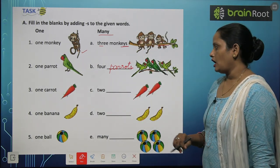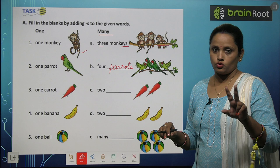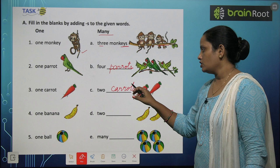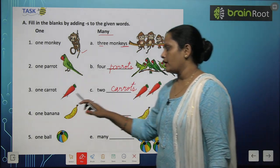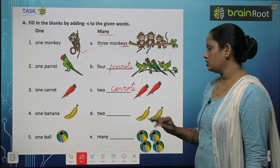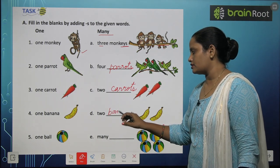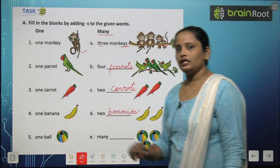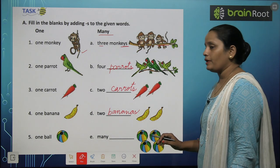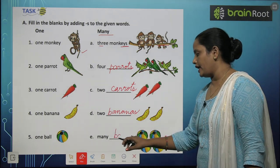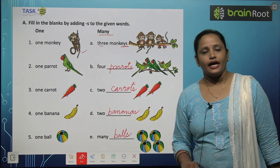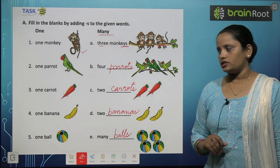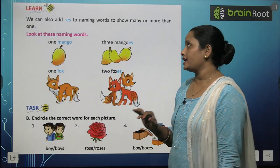One carrot — do hain toh carrot ban jayega carrots, two carrots. One banana, two bananas. One ball becomes many balls — B-A-L-L and S laga ke many kar diya, so many balls.